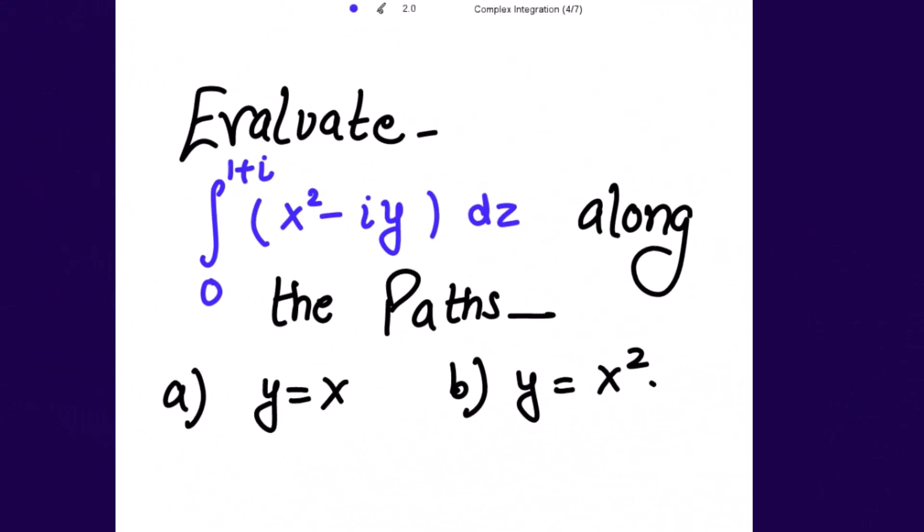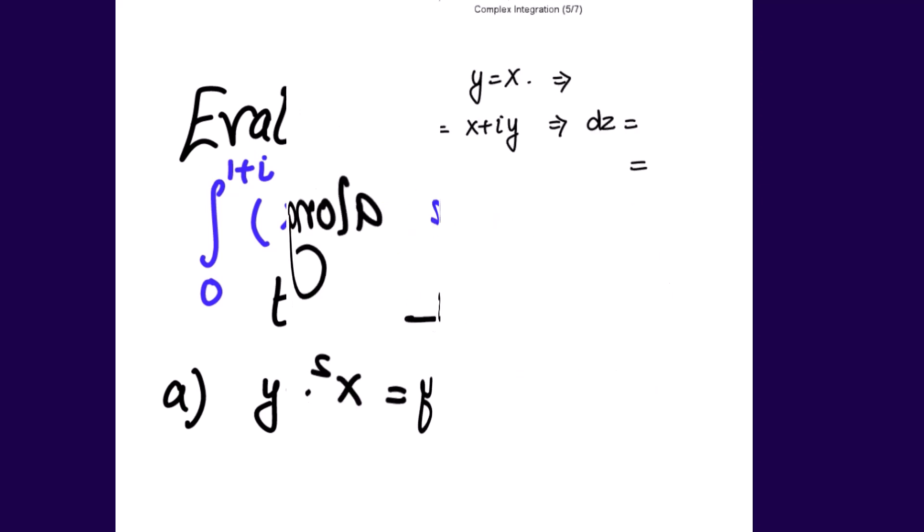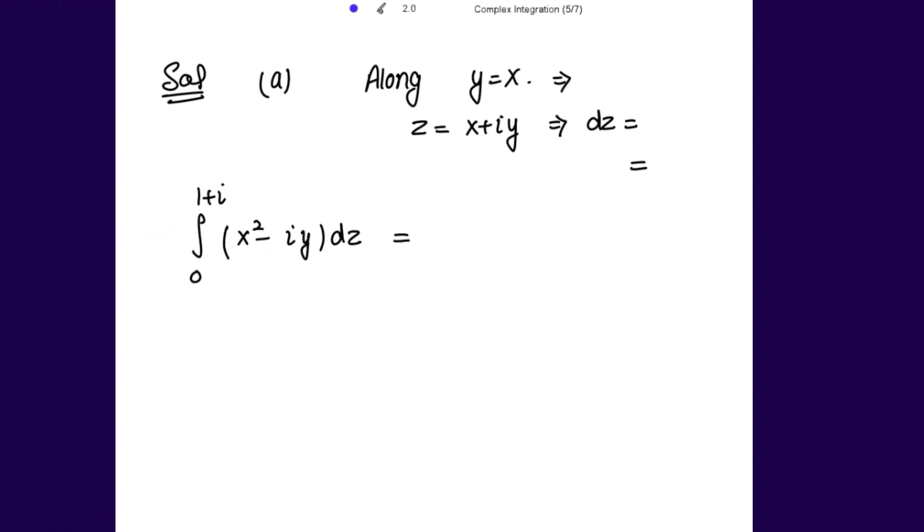Evaluate the line integral from 0 to 1+i of (x² - iy) dz along two paths: y = x and y = x². Same integral, two different paths — what do you think, would the results be the same or not? Let's check.